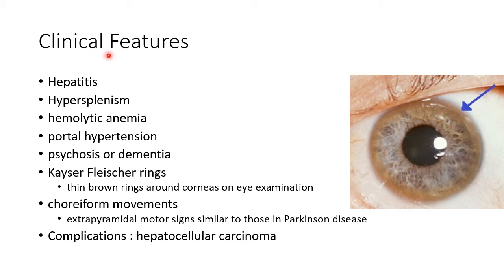Now let us see about the clinical features of Wilson's disease: hepatitis, hypersplenism, hemolytic anemia, portal hypertension, psychosis or dementia, and Kaiser-Fleischer rings, which are thin brown rings around the cornea on eye examination. This picture shows Kaiser-Fleischer rings.